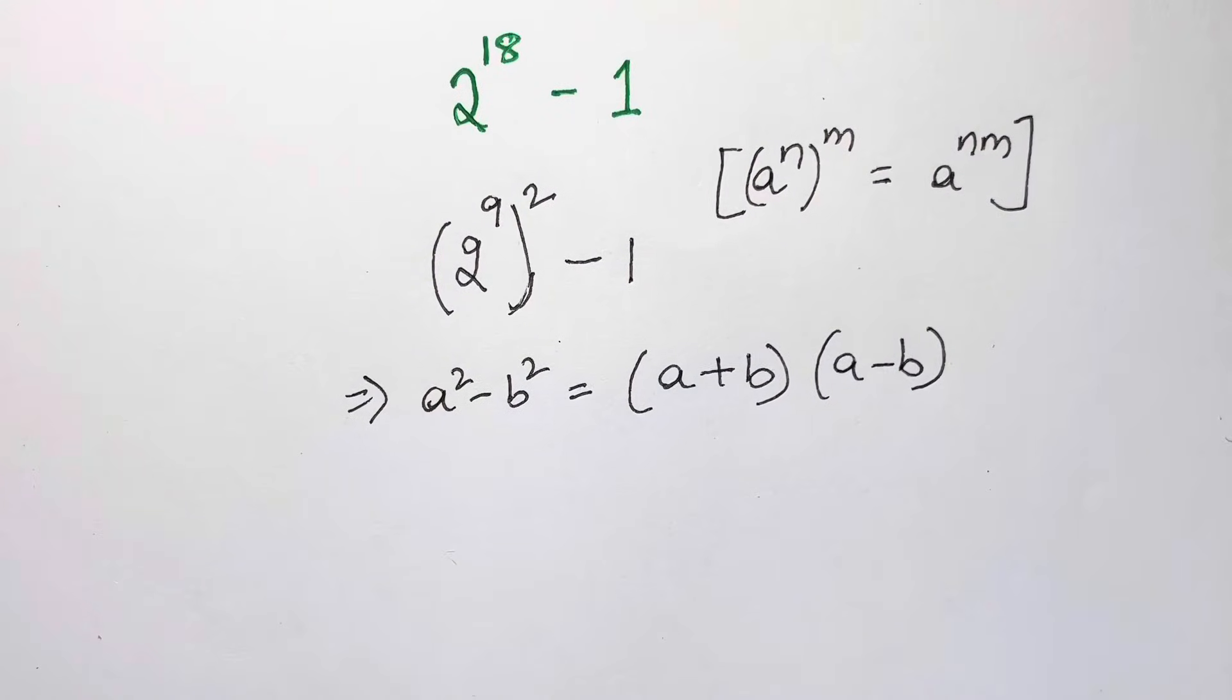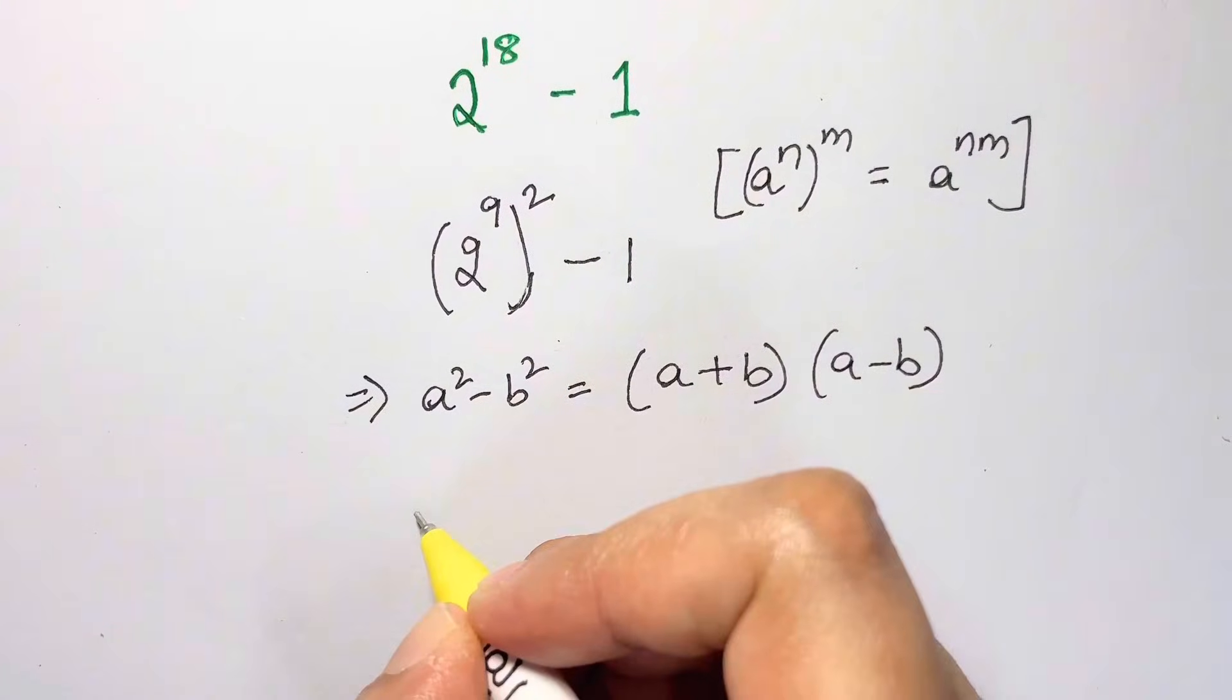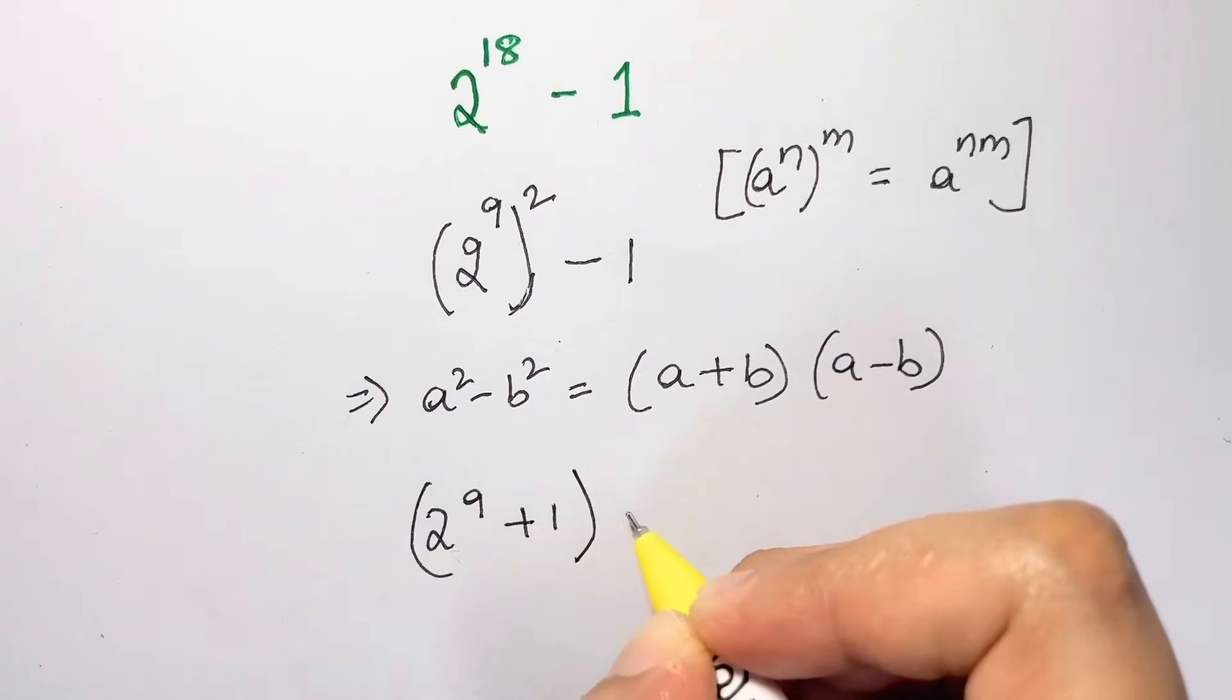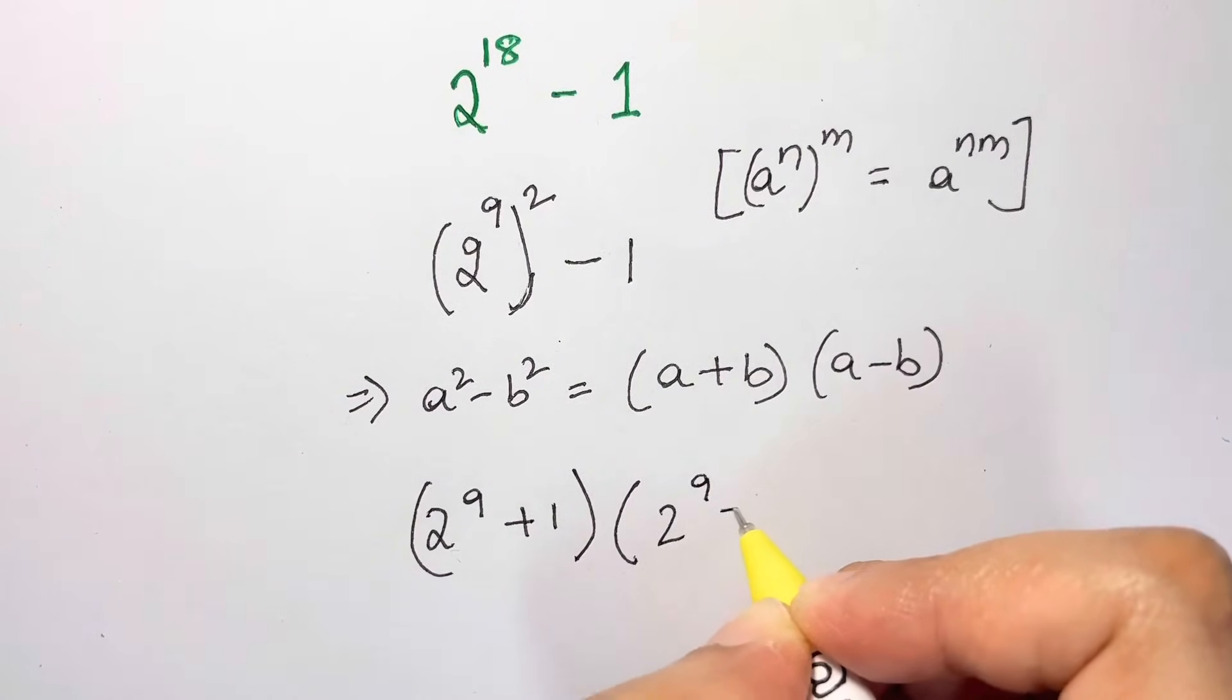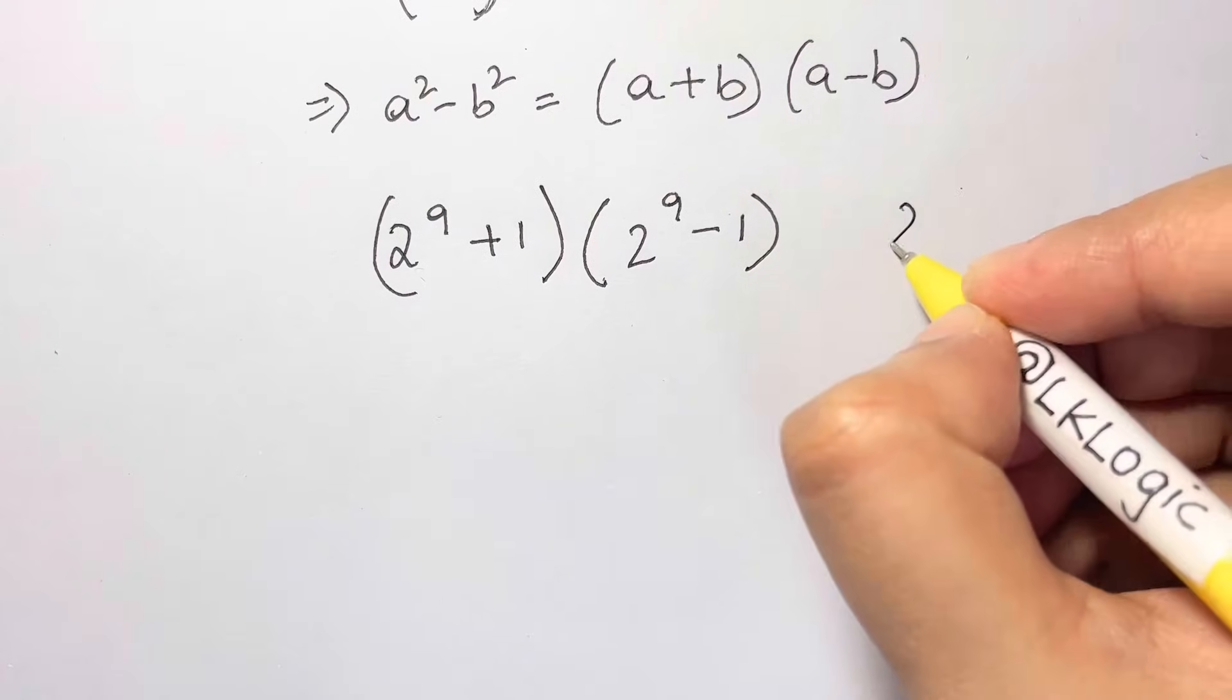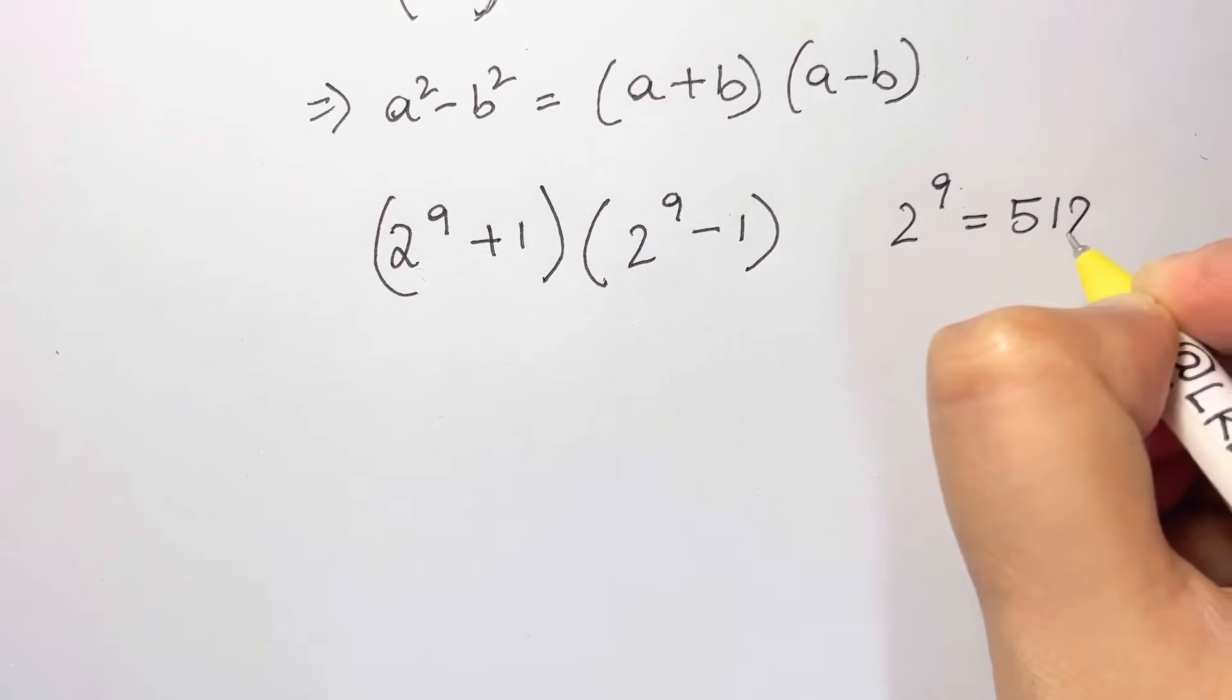Now we are going to solve for that. So we have 2 to the power of 9 plus 1 times 2 to the power of 9 minus 1. And then as we know 2 to the power of 9 is equal to 512.